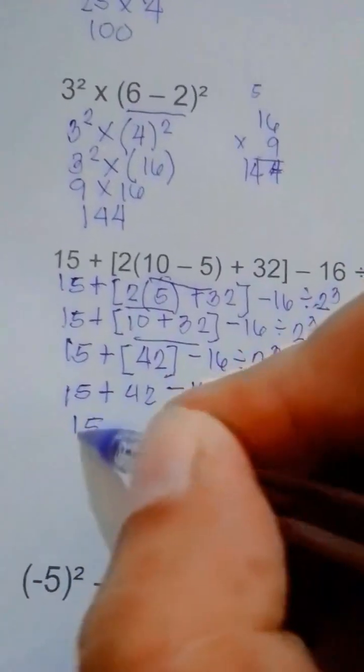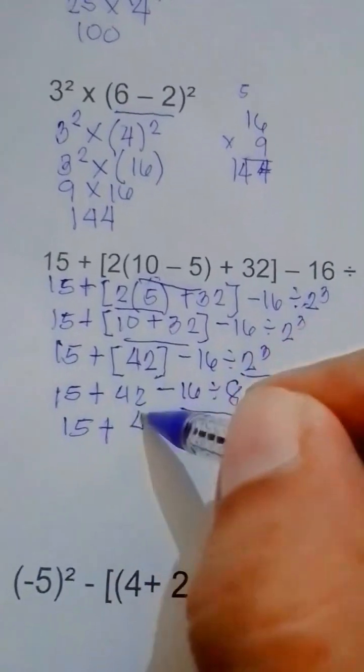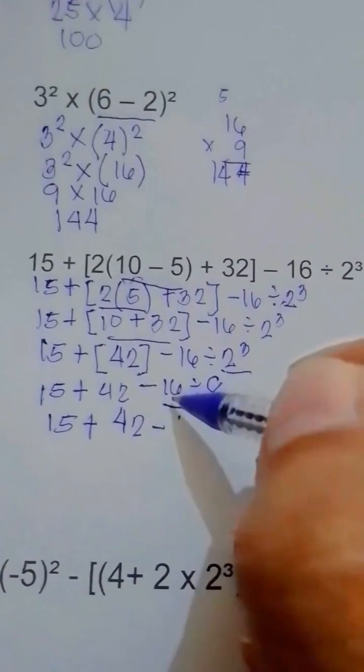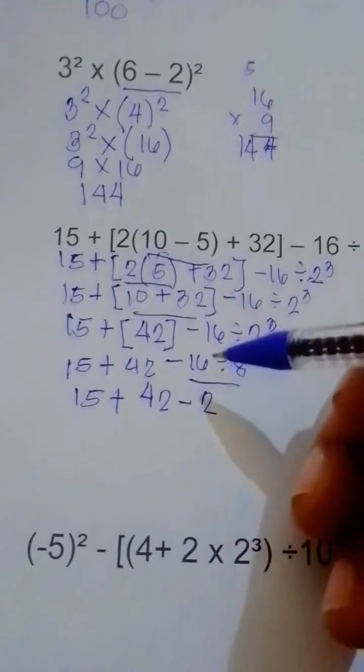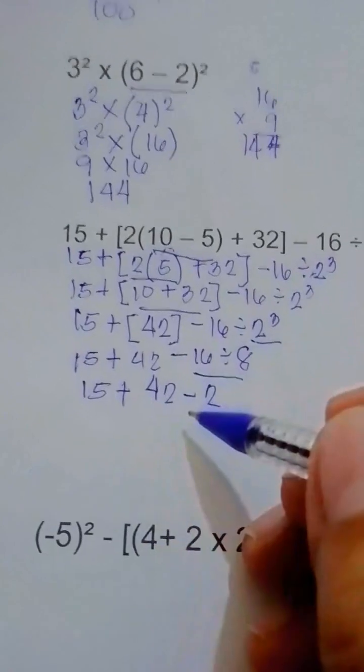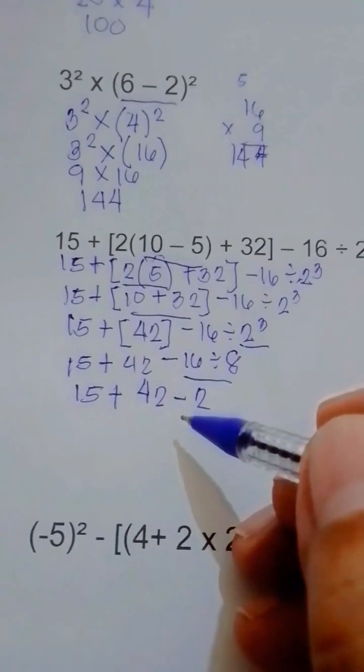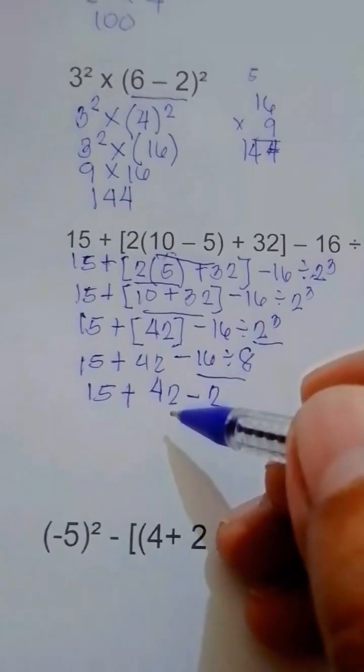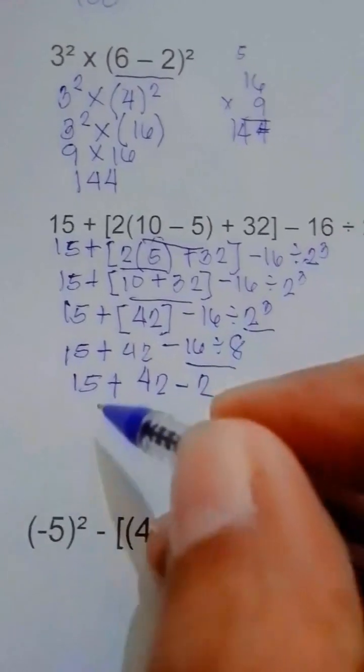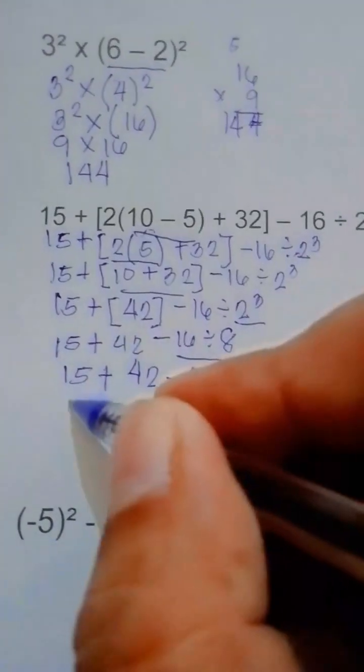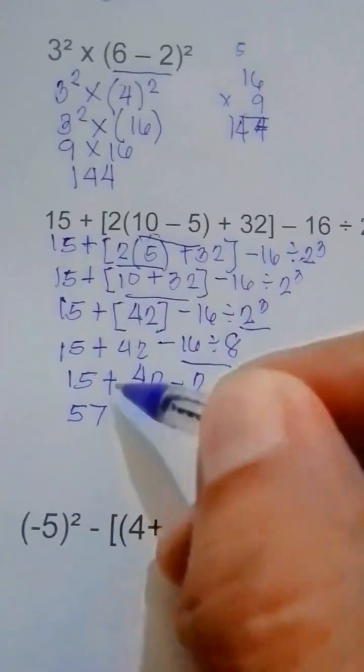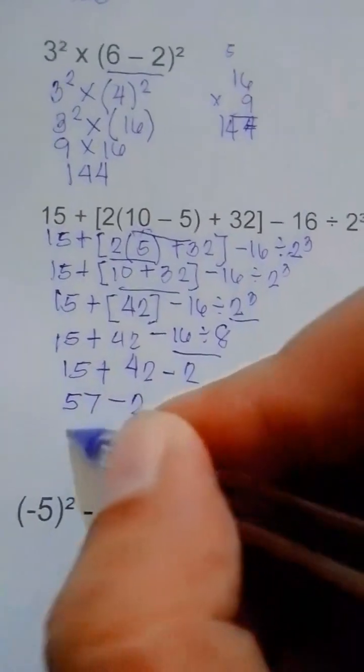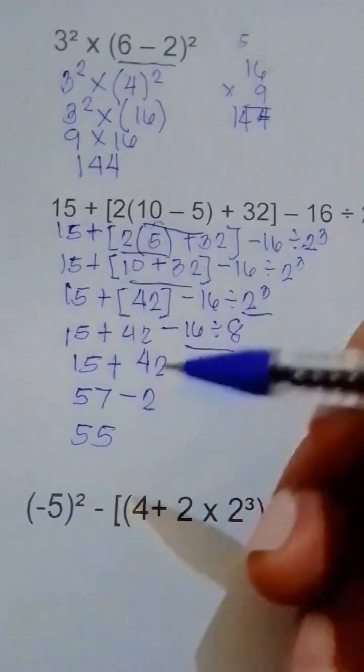Next operation that we are going to do is this one. So 15 plus 42 minus 16 divided by 8 equals 2. Next one is addition and subtraction. What comes first should be done first. So 15 plus 42 equals 57, so 57 minus 2 equals 55. So this is the final answer.